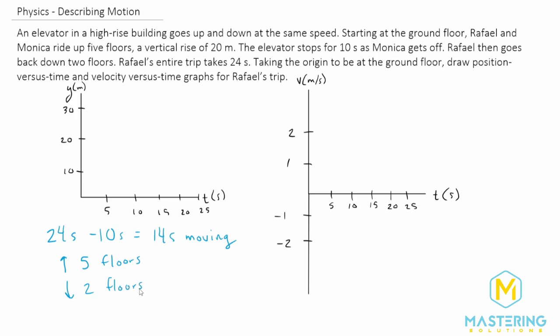And if we assume that the elevator was moving at roughly a constant velocity, there was 14 seconds that it was moving for a total of seven floors. So that means 14 divided by seven floors, it had to have been about two seconds per floor.